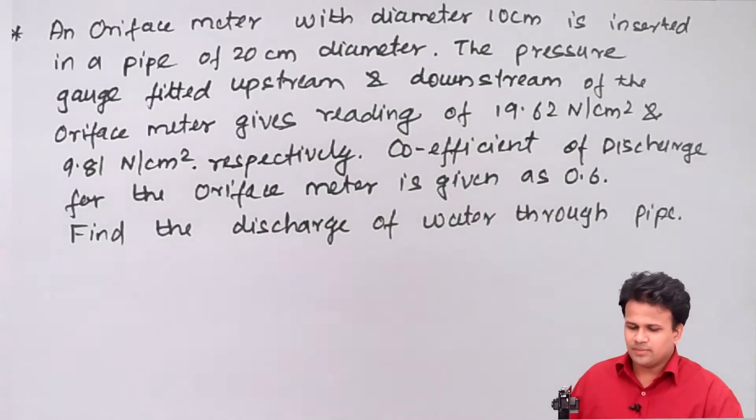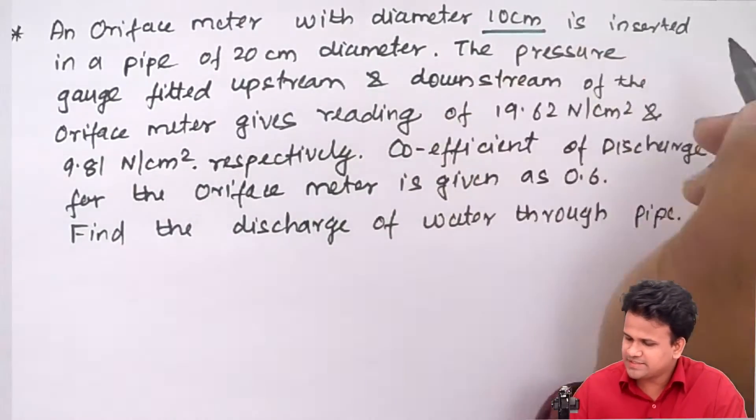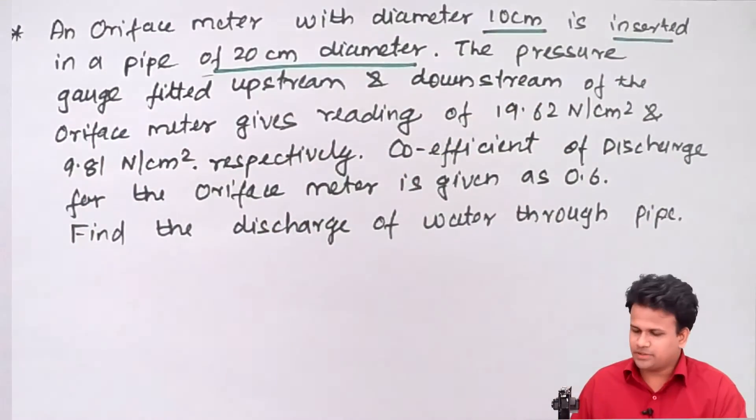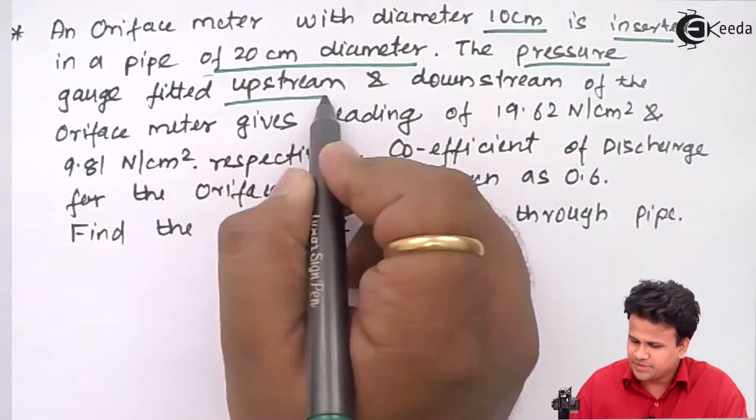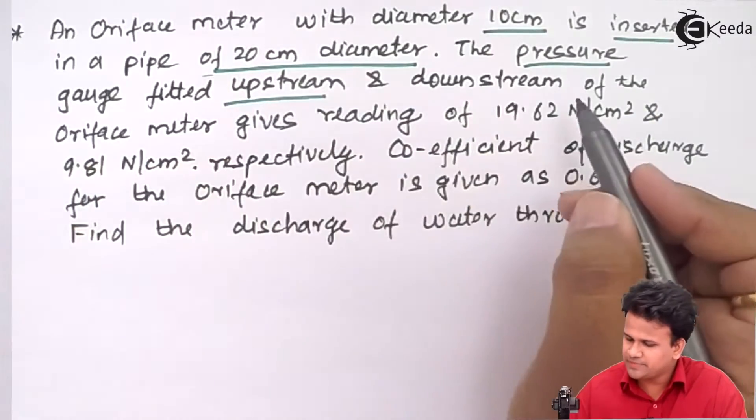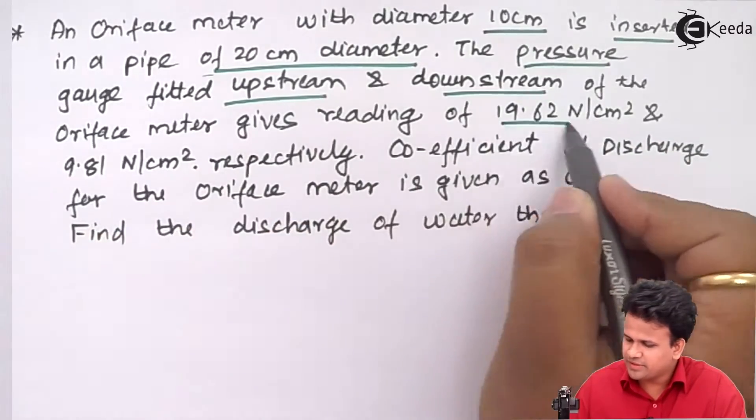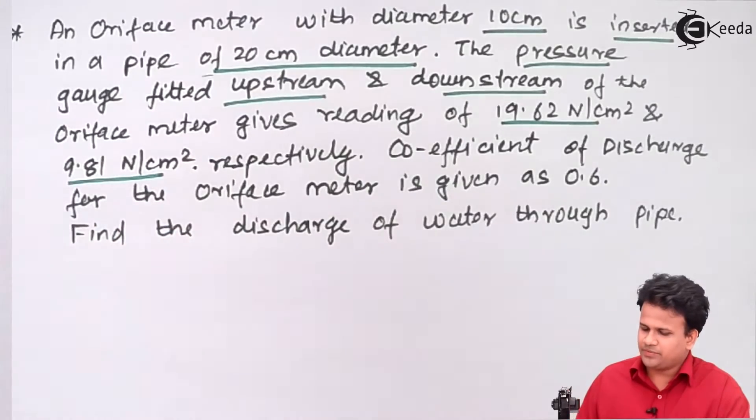We have an orifice meter having a diameter of 10 centimeter inserted in a pipe of 20 centimeter diameter. The pressure gauge fitted in the upstream and downstream of the orifice meter give the readings of 19.62 and 9.81.